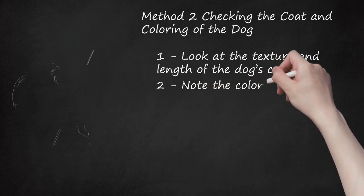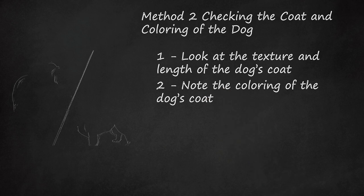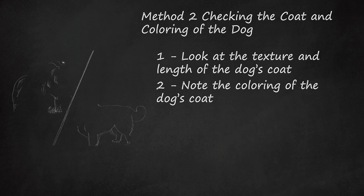Note the coloring of the dog's coat. Collies are known for the distinct coloring on their coats. There are four different colorings, with the most common being the Sable Color. The Sable coloring can range from light golden tan to dark mahogany. The second most common coloring is the tricolor, which is a mix of black, white, and tan.